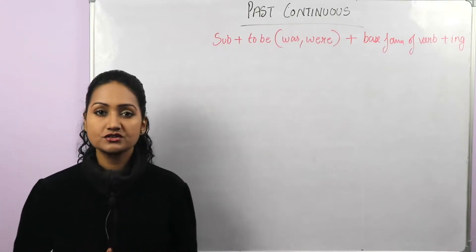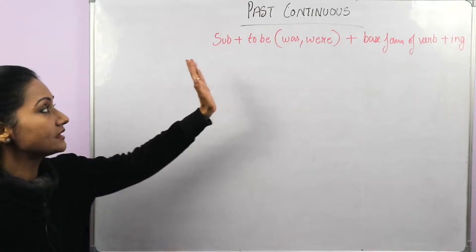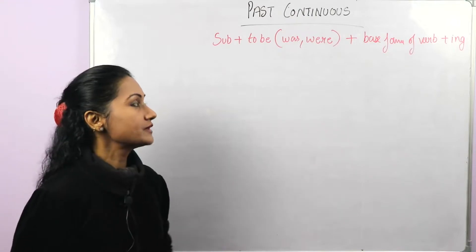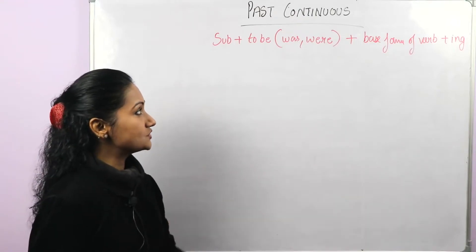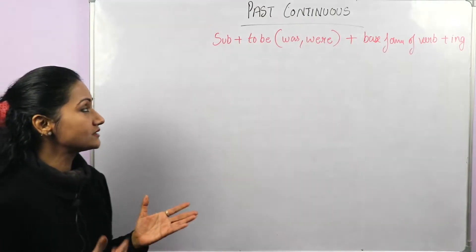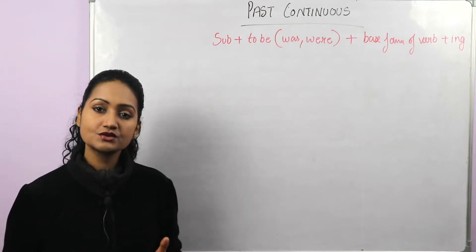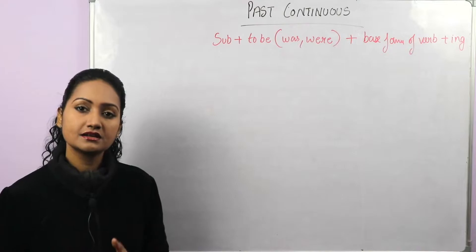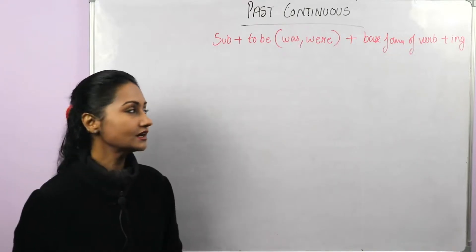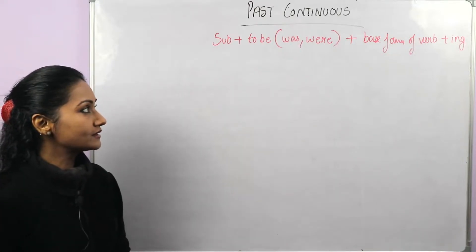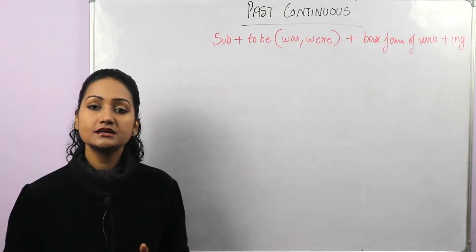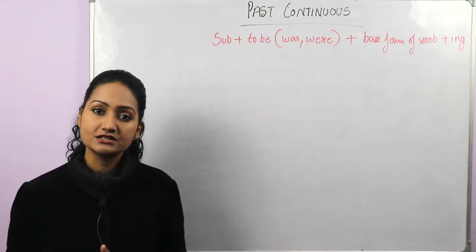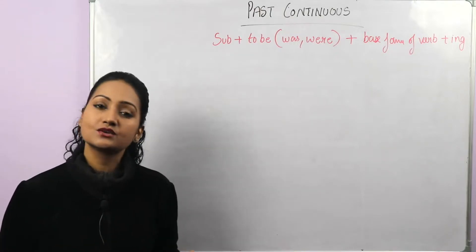Now look at the structure. It starts with the subject, then the to-be verb in past — was or were — plus the base form of the verb plus -ing. Just remember that in continuous forms we always use the base form of the verb with -ing. We can never use -ing with the second or third form.